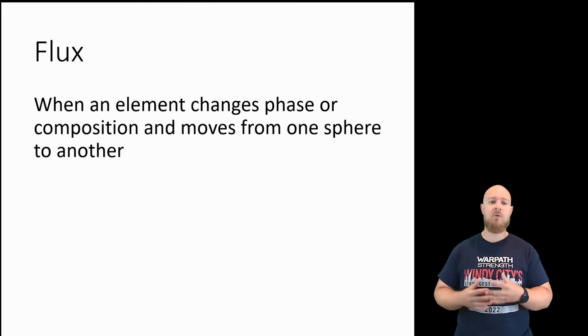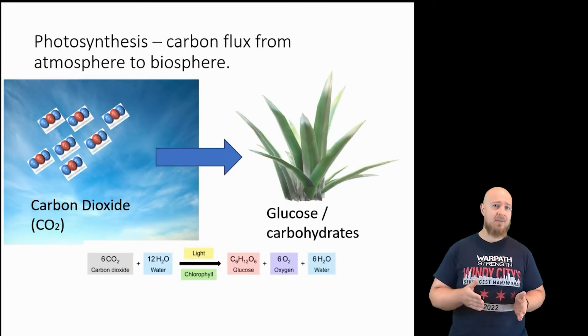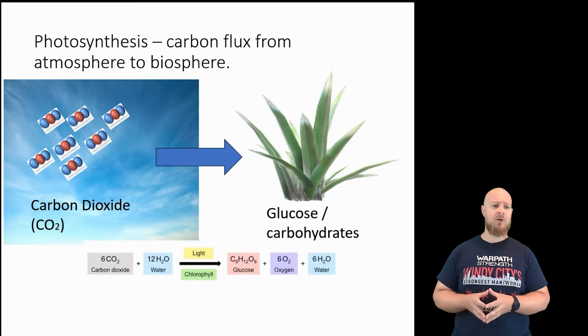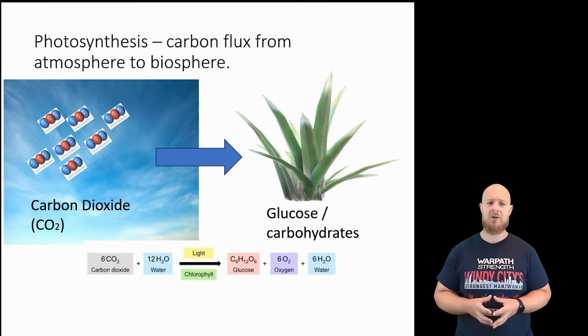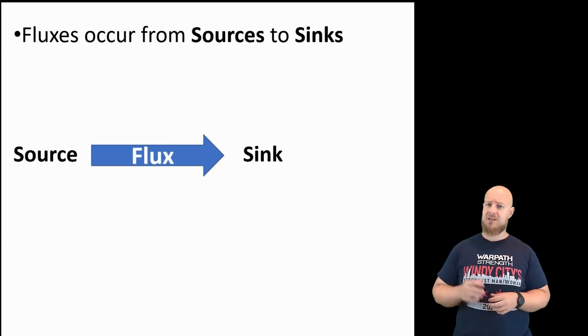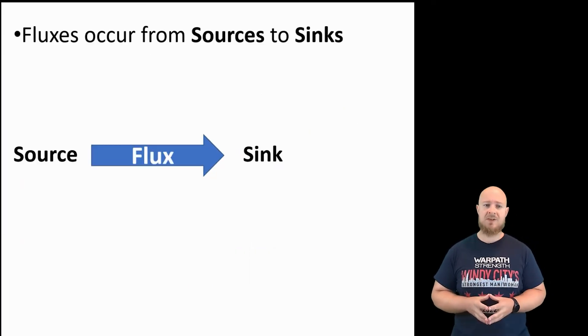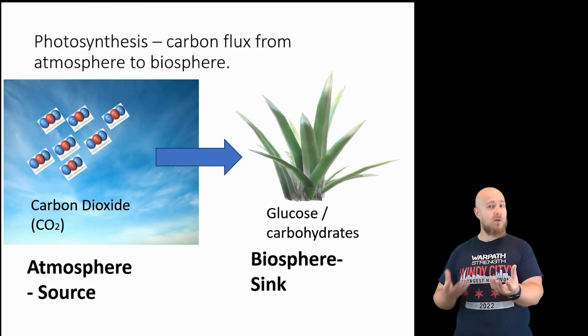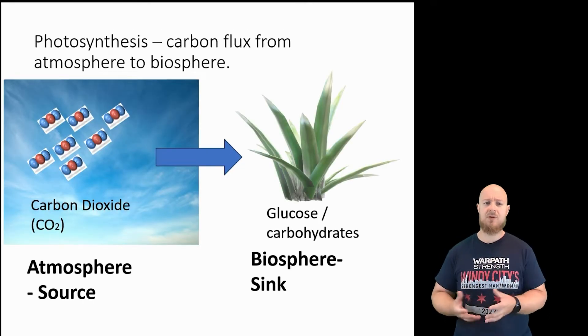Flux means movement or flow. For example, photosynthesis is a means for carbon to flux from the atmosphere, where it's stored as carbon dioxide, into the biosphere, where it is stored as glucose and carbohydrates. All fluxes have sources and sinks. In the example of photosynthesis, the source of carbon is the atmosphere, and the sink for carbon is plants or the biosphere.